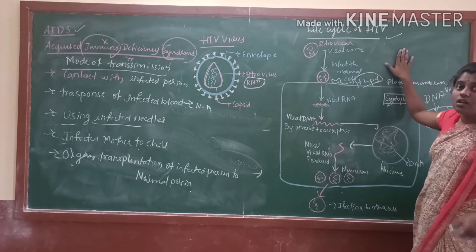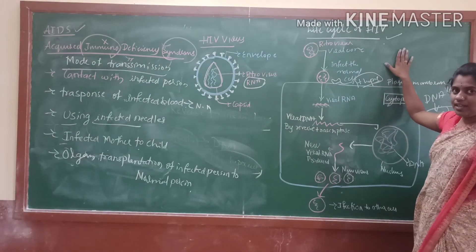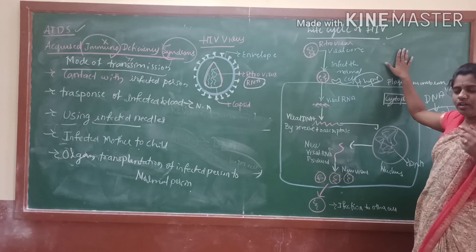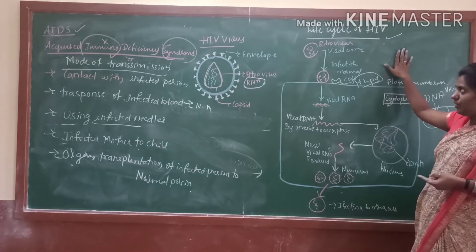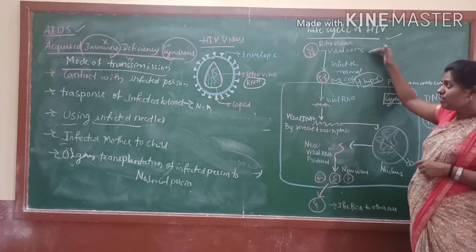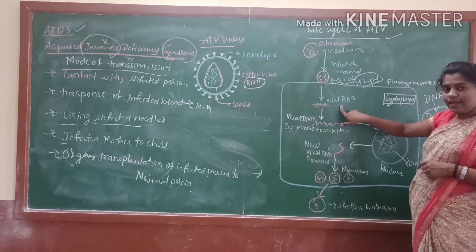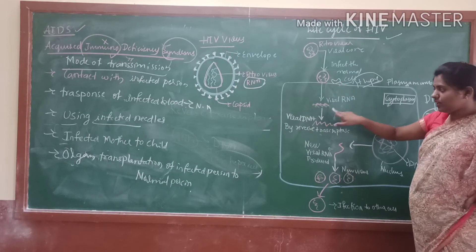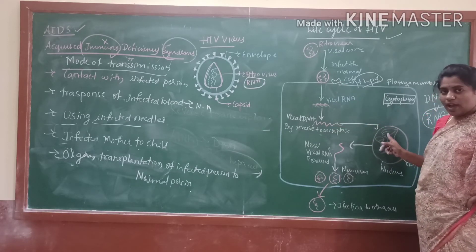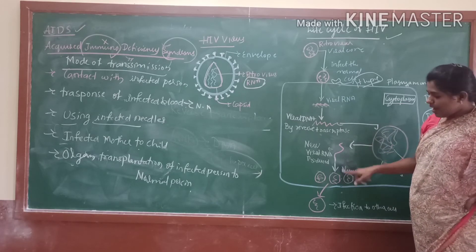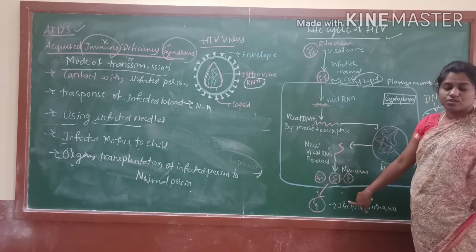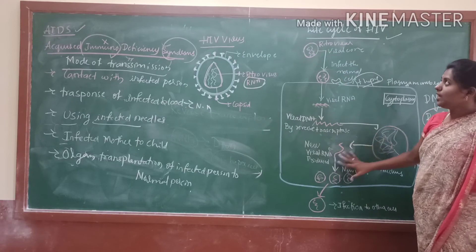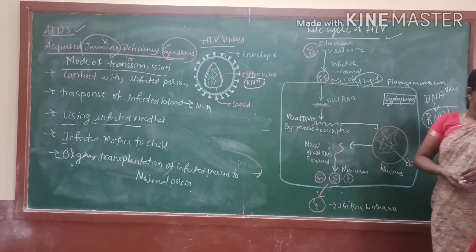This is a very important question for your exam — explain the life cycle of HIV, or explain how RNA will work in a normal cell. Firstly the RNA of the virus infects the cell, the viral RNA enters into the cell, and after that by using reverse transcriptase it affects the T cells. After it becomes DNA, the viral DNA produces viral RNA, and they form new viruses and produce new cells.